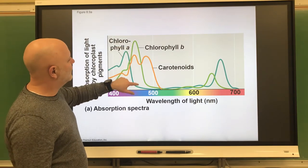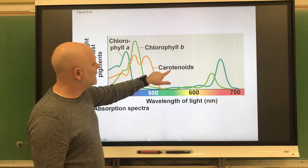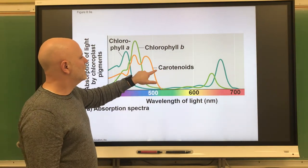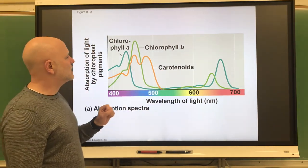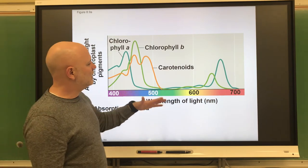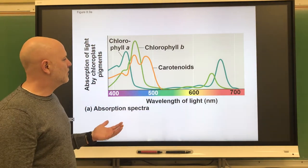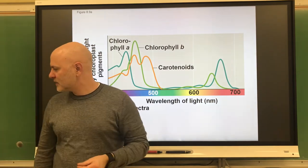So chlorophyll B also is a greenish pigment. And the carotenoids, carrot right in here, what color are carrots? Carrots are orange. This is an orangish pigment to us. And then lastly, xanthophylls, not shown on here, are yellowish pigments because they absorb the least amount in the yellow range.